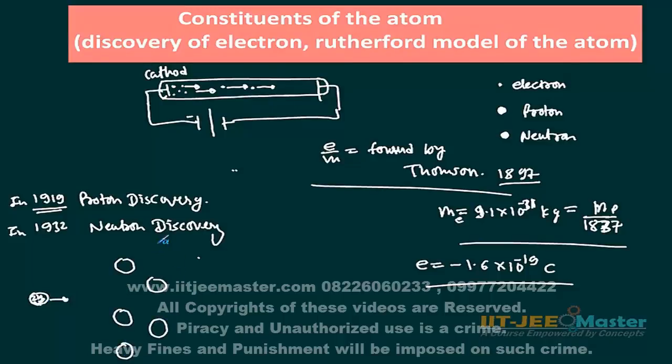In the thin foil of the gold you can see atoms will be like this. And what he found? He found that most of the alpha particles passed through without any deflection. Most, most means 99.9% they passed without deflection. Few of them deflected a little bit and very very less of the particle were reflected back.